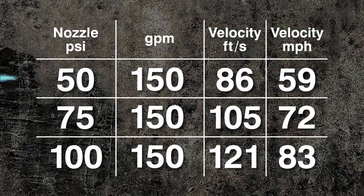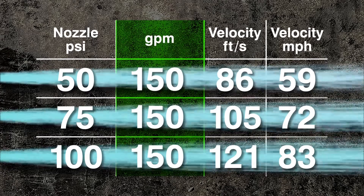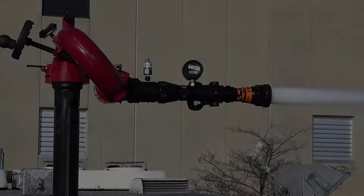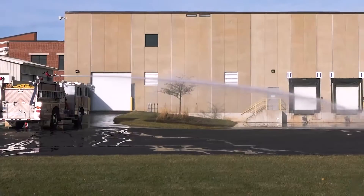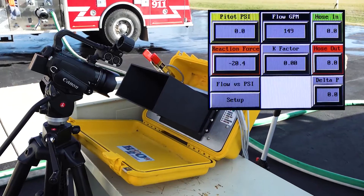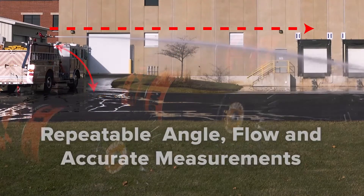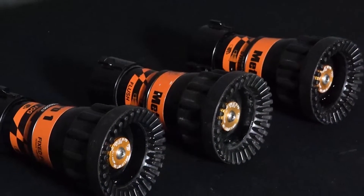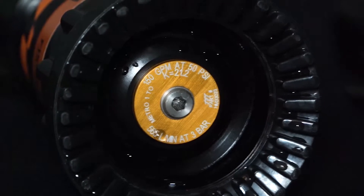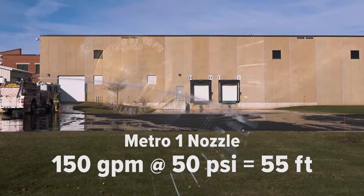Our flow experiments will use a flow of 150 GPM at three different nozzle operating pressures or velocities. Using the outlet of a deck gun, a flow meter, and pressure transducers to achieve repeatable angle, flow, and accurate measurements, we will experiment with a 150 GPM nozzle at 50, 75, and 100 PSI.